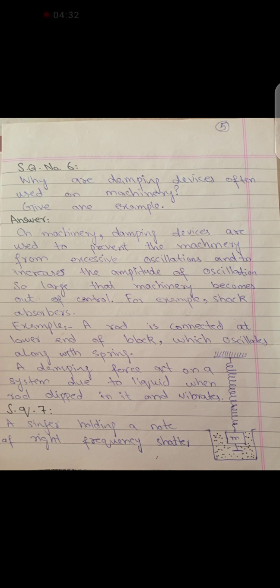Question number 6: Why are damping devices often used on machinery? Give an example. Damping devices are used because they prevent excessive oscillation and increase in the amplitude of oscillation, so the machinery doesn't become out of control. For example, the shock absorber. A rod is connected to the body with a mass. When we oscillate it in a viscous material, friction turns out the oscillations.